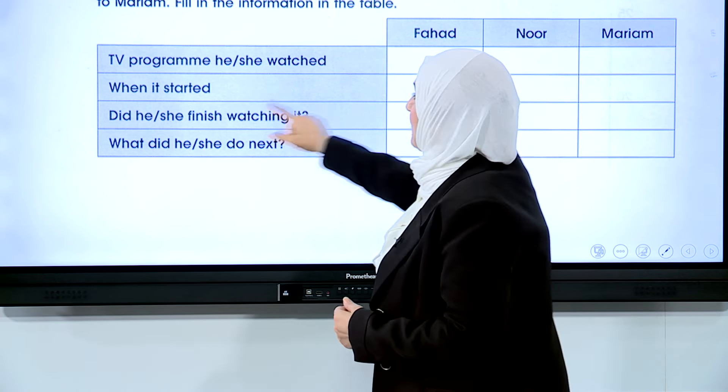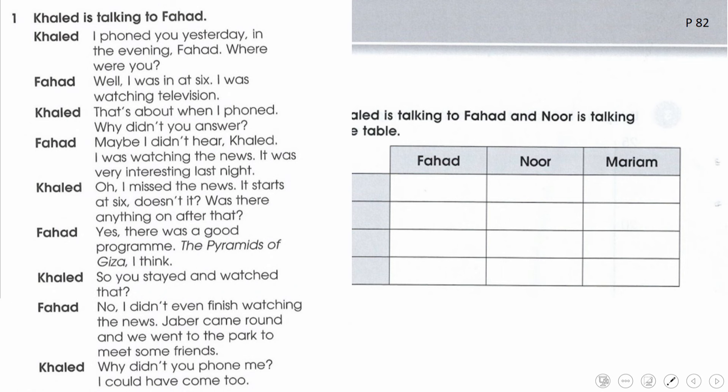خالد is talking to فهد. Khalid: I found you yesterday in the evening, where were you? Fahad: Well, I was in at six, I was watching television - كان يشاهد التلفاز الساعة السادسة. Khalid: That's about when I called. Why didn't you answer? Fahad: Maybe I didn't hear.